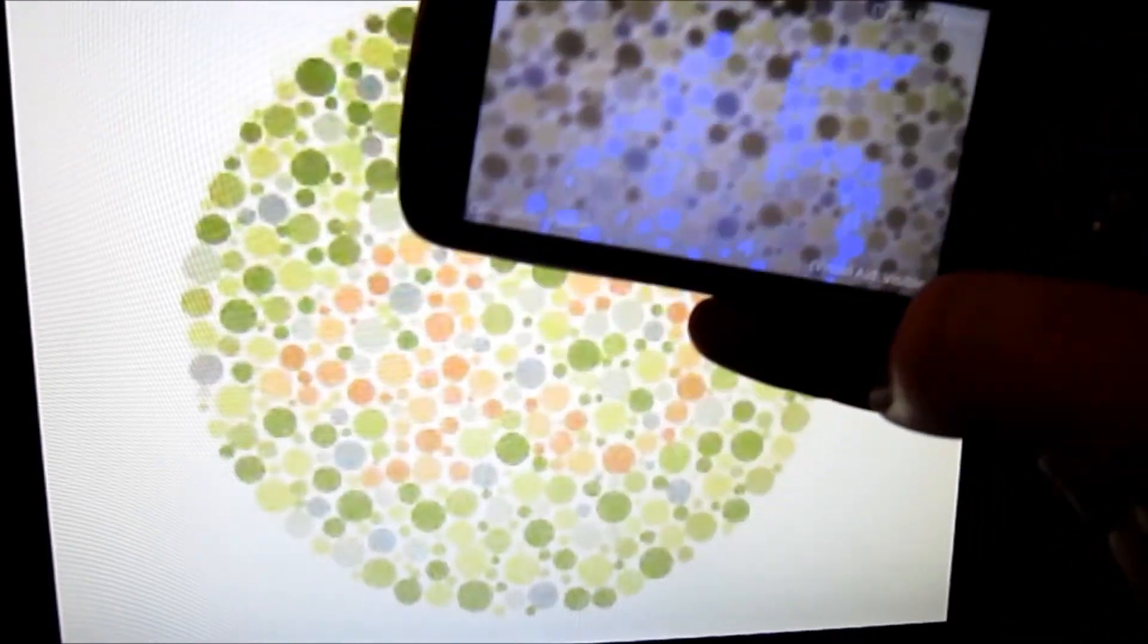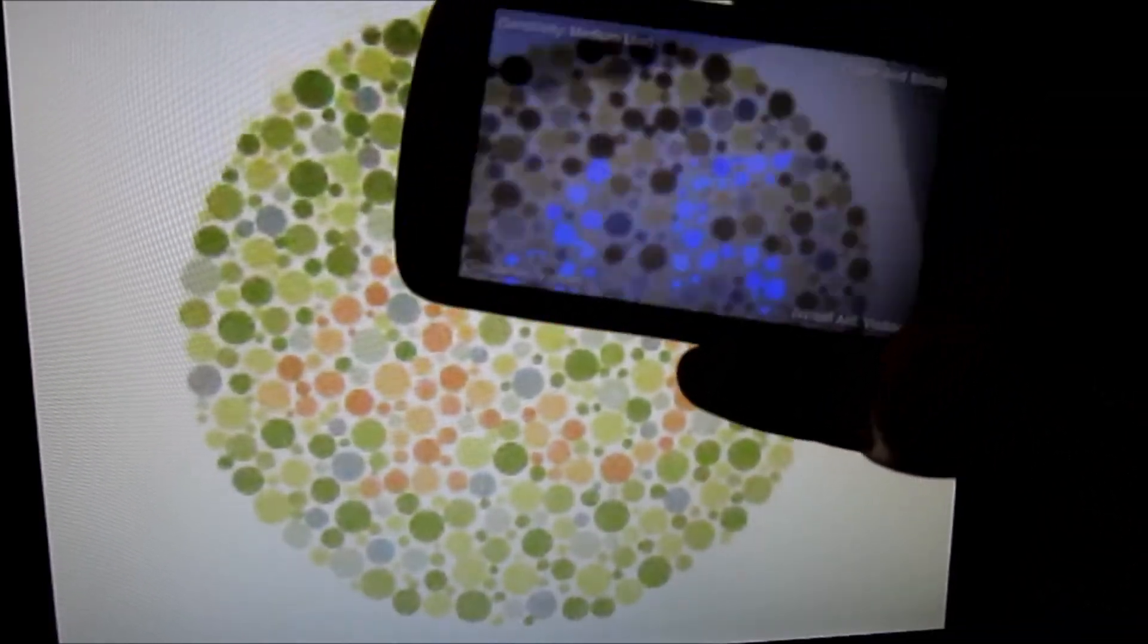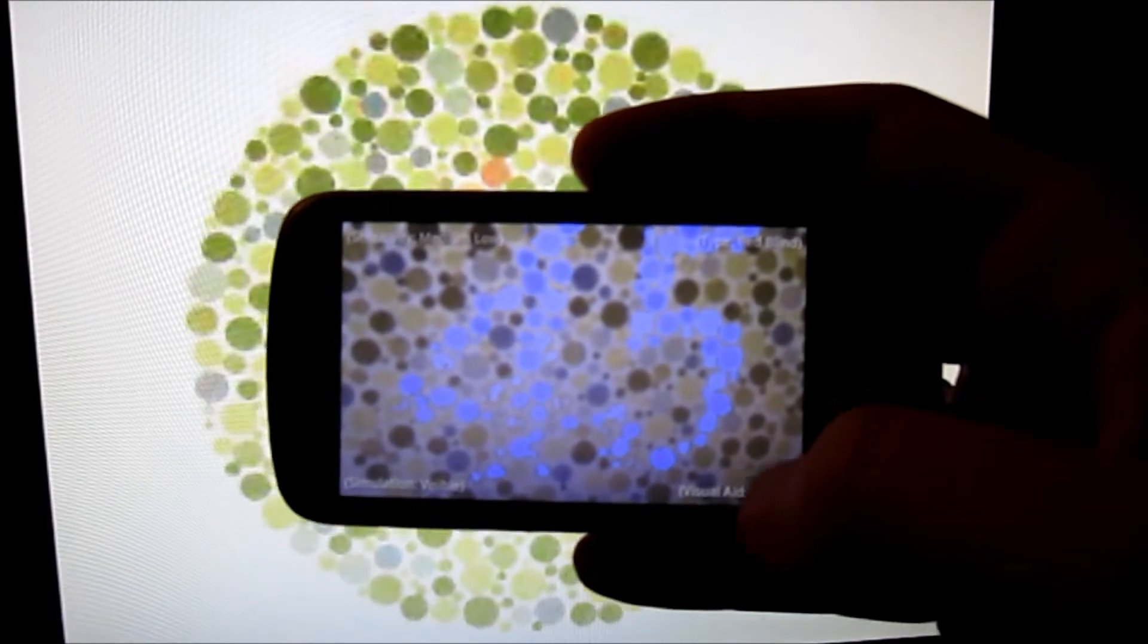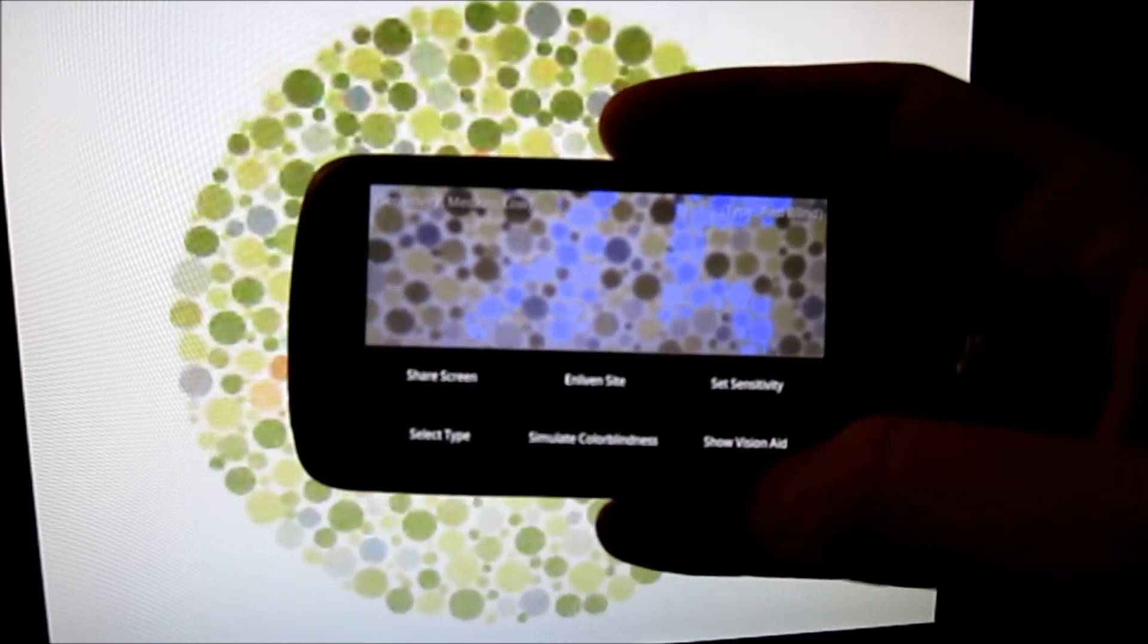For example, someone who is red-green colorblind will now see a blue overlay on top of anything that is red, so they can tell the difference between red and green.